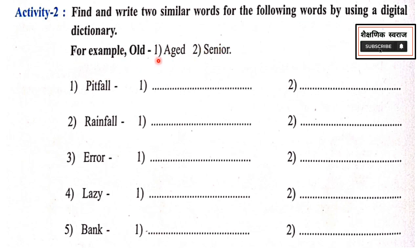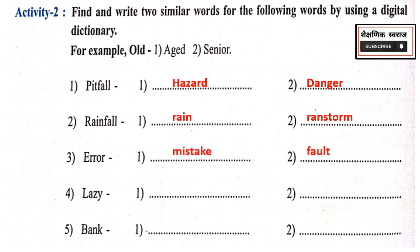For example, Old — Aged and Senior. Pitfall — Rain and Rainstorm. Error — Mistake and Fault. Lazy — Idle and Sleepy. Bank — Slope and Rise.